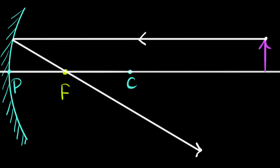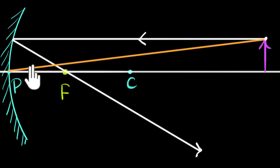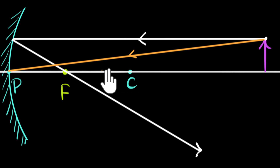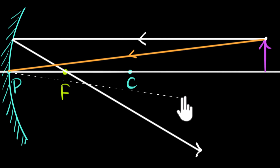Another ray we can draw goes through the focus, or through the center of curvature. But I like to draw a ray targeted at the pole. The principal axis forms the normal at the pole because it passes through the center of curvature, so we can easily see the angle of incidence. After reflection, the ray of light goes the other way, keeping the angle of reflection the same.